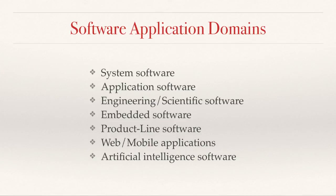In general, system software consists of operating systems, device drivers, and utilities. Application software consists of the applications you interact with every day, whether on your laptop or on your mobile phone. Some examples of engineering or scientific software would be AutoCAD, Mathematica, or something like SAS, which is a statistical package.